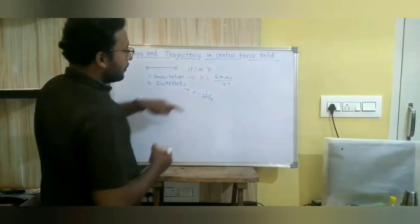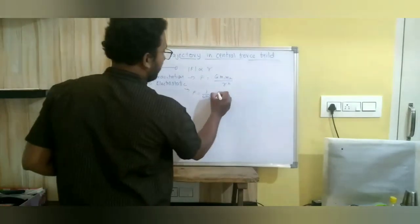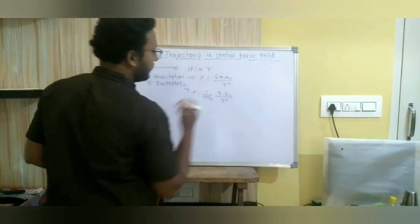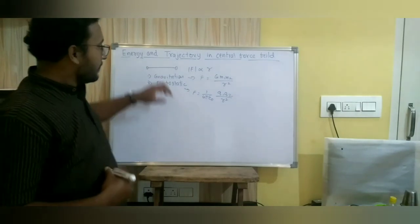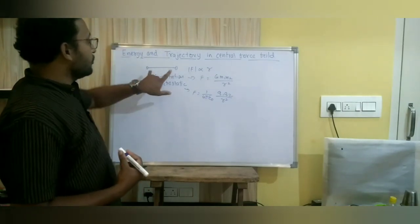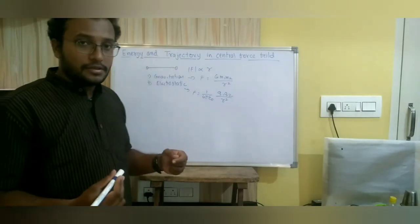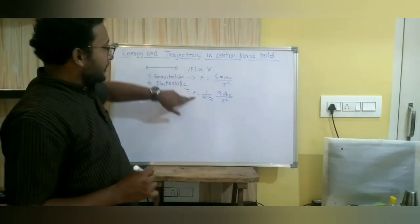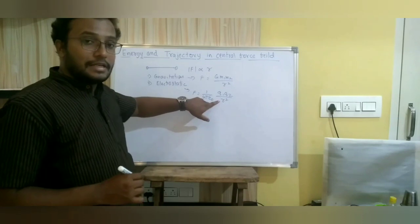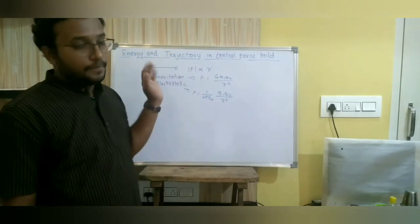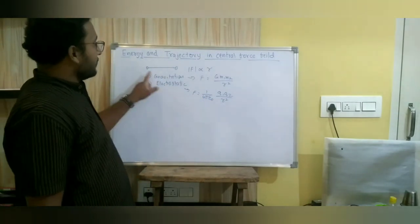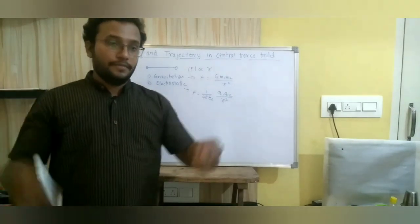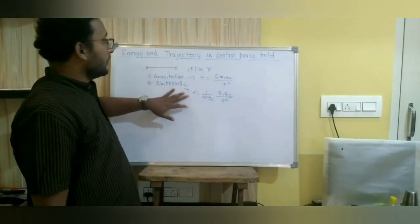Similarly, the electrostatic force is given by (1/4πε₀)·q1·q2 divided by R². For a given pair of charges q1 and q2, the force is inversely proportional to the square of the distance, and the force acts only along the line joining the two charges. That is why both gravitational and electrostatic forces are called central forces.